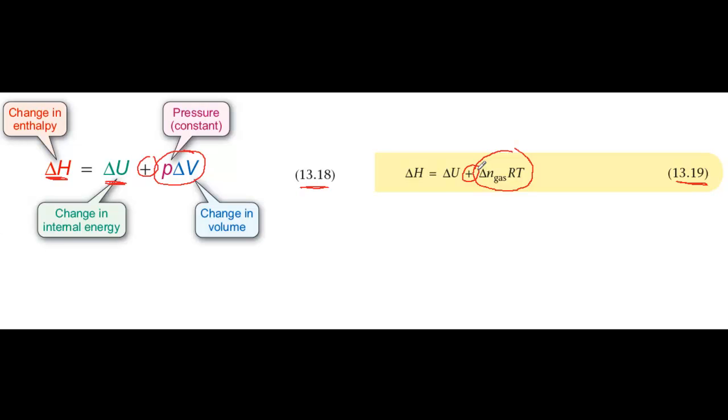The other common mistake is getting the units wrong. The P delta V and the delta N gas RT terms will give you an answer in joules per mole, whereas delta U and delta H are usually given in kilojoules per mole.